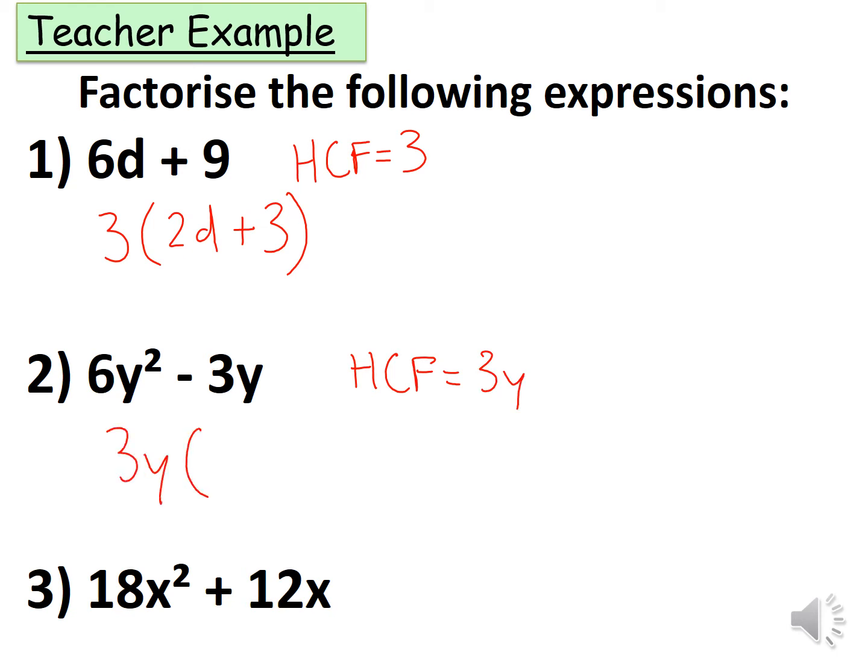So let's take out 3y outside the bracket and then divide 3y by the two terms above. So 6y² divided by 3y is 2y.